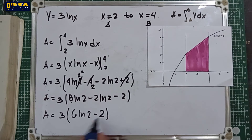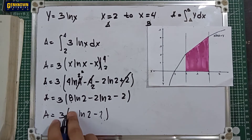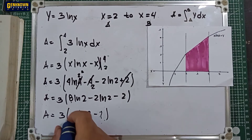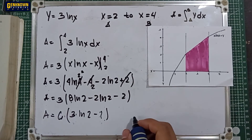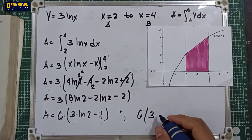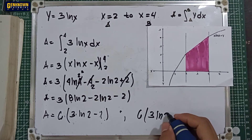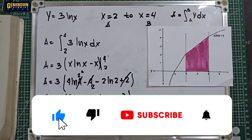We can factor out 2 from the expression inside. Factoring gives 3 multiplied by 2, which is 6, times (3 ln 2 minus 1). So the final answer is 6(3 ln 2 minus 1). This is the final area.